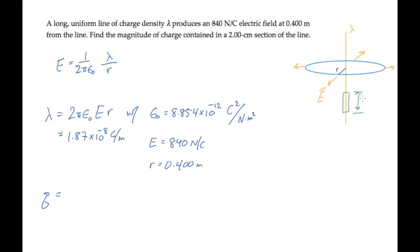That section of the line contains charge q equal to lambda, the charge per unit length, times the length. So q equals lambda l.